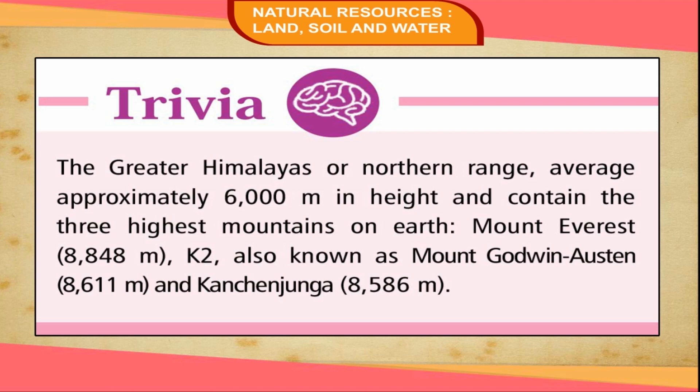Trivia: The Greater Himalayas or Northern Range average approximately 6,000 meters in height and contain the three highest mountains on earth — Mount Everest at 8,848 meters, K2 also known as Mount Godwin-Austin at 8,611 meters, and Kanchenjunga at 8,586 meters.